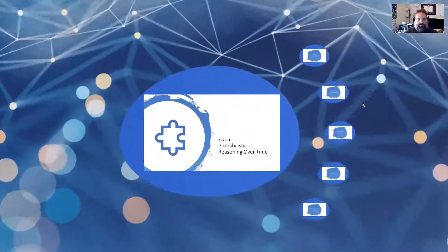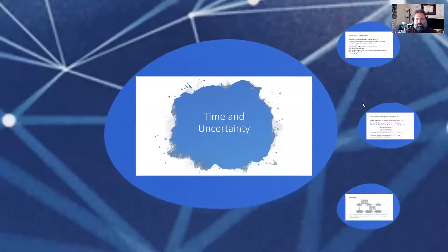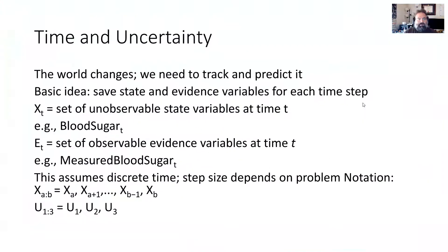Moving into probabilistic reasoning over time, which is Chapter 14. We start with the discussion of time and uncertainty. The basic idea is that it's not a static world — things change over time and you need to track what's changing and predict what's going to change. You basically need to save some state, and X sub T is a set of unobservable state variables at time T — for example, your blood sugar at time T, which will change depending on whether you're exercising, eating, or sleeping.